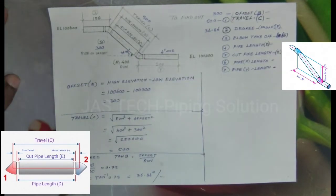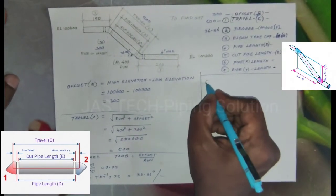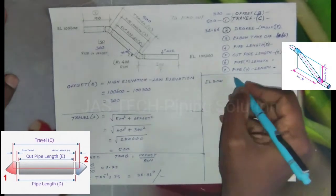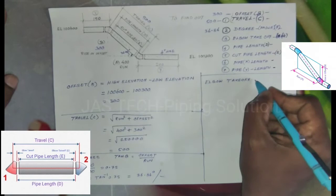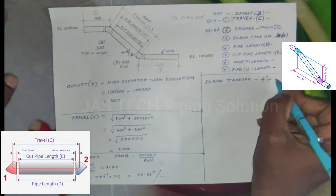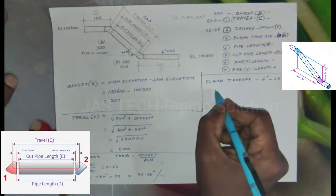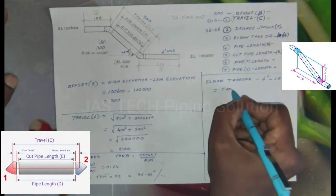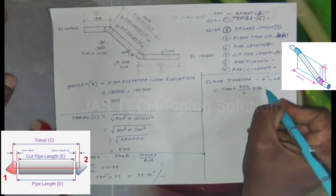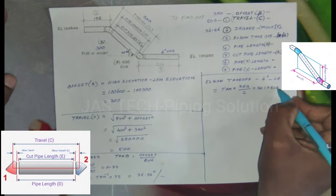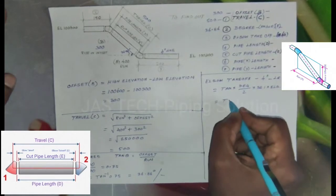Next one, Elbow Takeoff G. This is a 4-inch line with long radius elbow. The formula is: tan of Degree divided by 2, times 38.1, times elbow size.